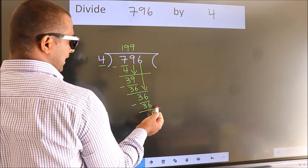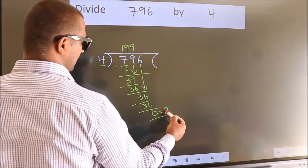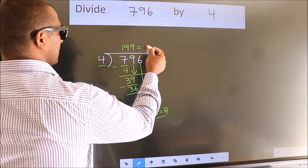No more numbers to bring down. So we stop here. This is our remainder. This is our quotient.